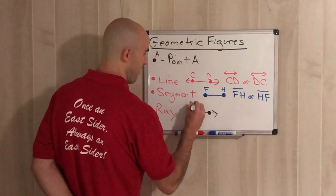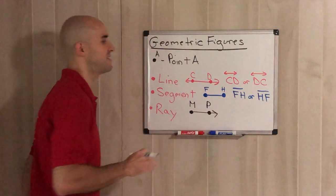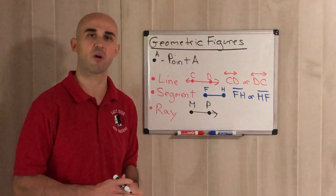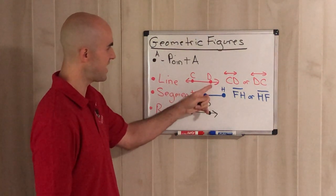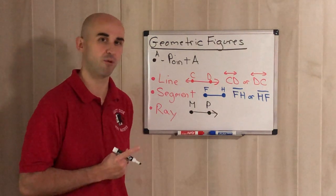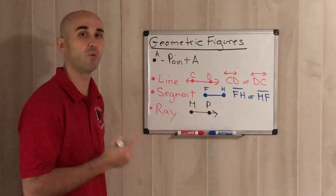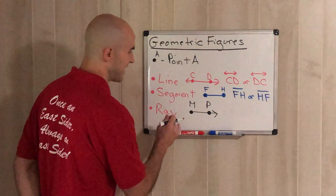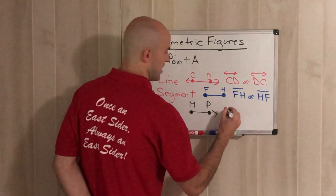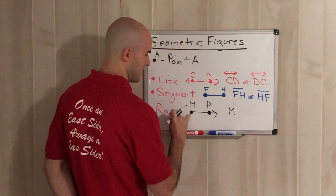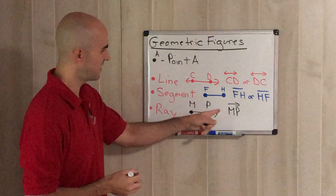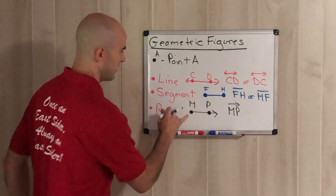Now with a ray, you have to be careful about labeling. Let's say we have points M and P. With a line or segment, we could call it two things because there was no defined starting point. But with a ray, there's only one way to label it — because there's only one starting point. We can see the starting point is M, because it starts at M and goes on forever toward P. So we always have to start with M: ray MP.